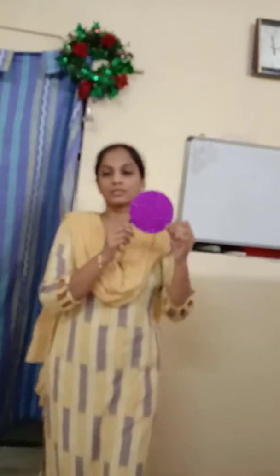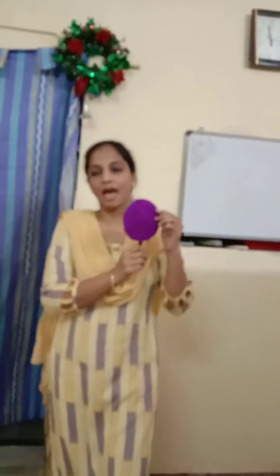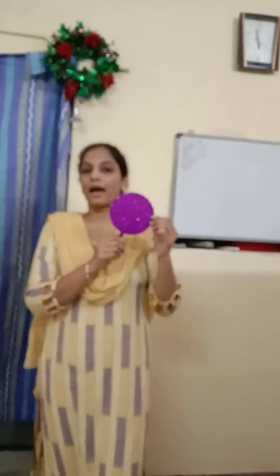I have four sides. I am a square. I am a circle, I am a circle. You can see me everywhere. I have one side. I am a circle, I am a circle, round and round.